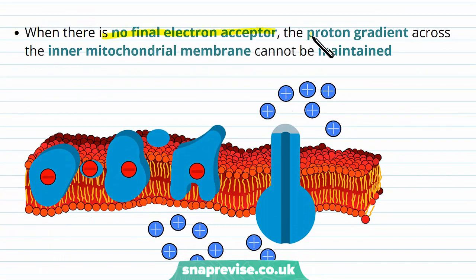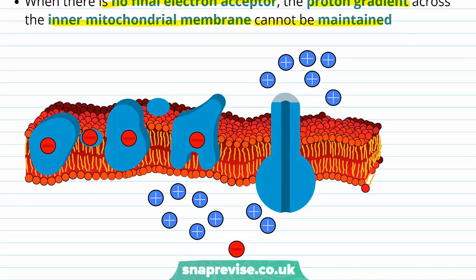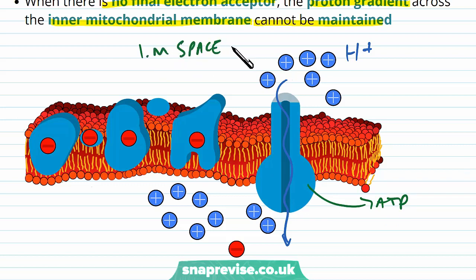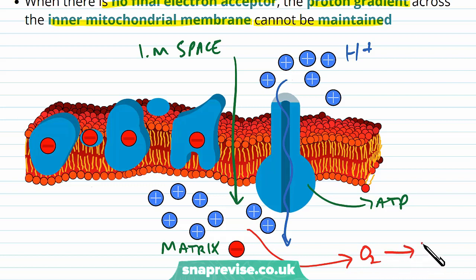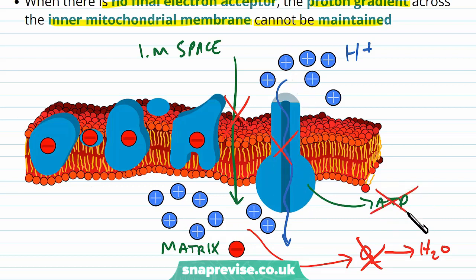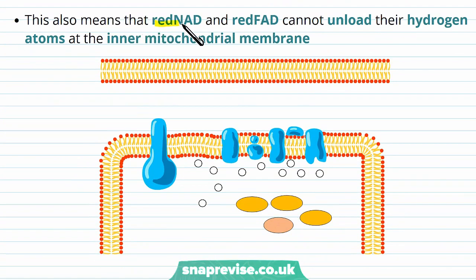When there's no final electron acceptor, the proton gradient across the inner mitochondrial membrane cannot be maintained. For hydrogen ions to pass through ATP synthase and make ATP, there has to be a gradient from the intermembrane space to the matrix. Normally hydrogen ions get mopped up by oxygen to form water, but when there's no oxygen they build up and the gradient disappears, so they stop flowing through the channel and ATP doesn't get made.